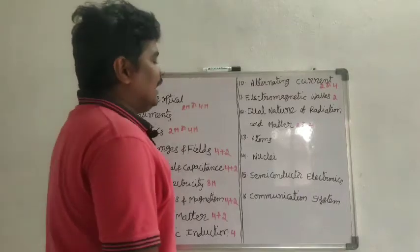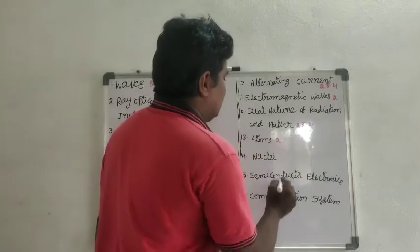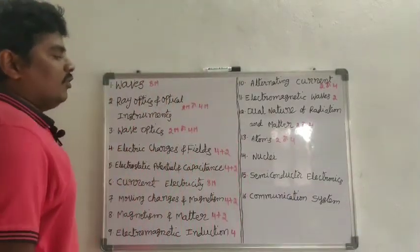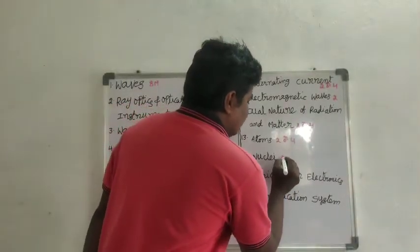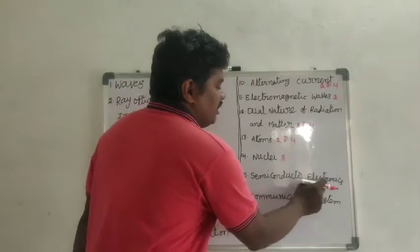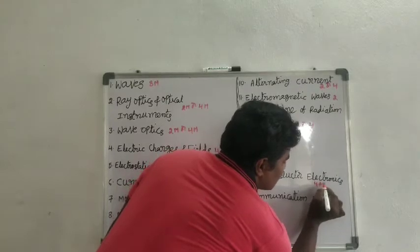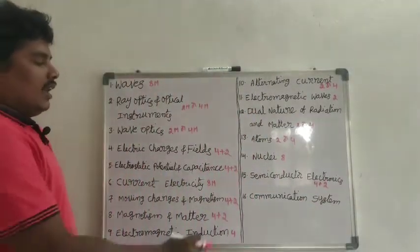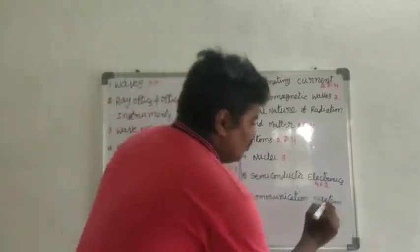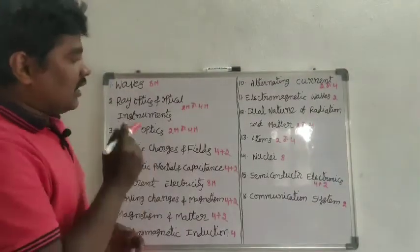Thirteenth one, atoms—from this chapter we get 2 marks or 4 marks questions. Fourteenth one, nuclear—definitely we get 8 marks questions. Fifteenth one, semiconductor electronics—we get 4 marks plus 2 marks questions. Last but not least, communication system—we get 2 marks questions. This is our 12th class syllabus.